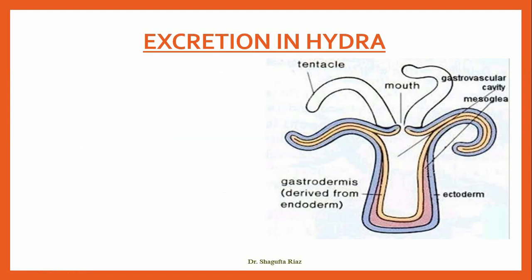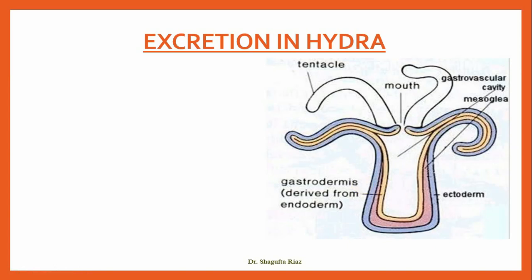The first example is of hydra. Hydra is a coelenterate, and if you remember from your previous class, we studied that coelenterates have a very simple body structure. They are diploblastic, which means they have only two layers: ectoderm and endoderm. They have a body cavity also called a gastrovascular cavity, so water is present in the surroundings of the hydra and enters through the mouth into this body cavity. That's why the external and internal layers of cells are in direct contact with all the cells present in the hydra.